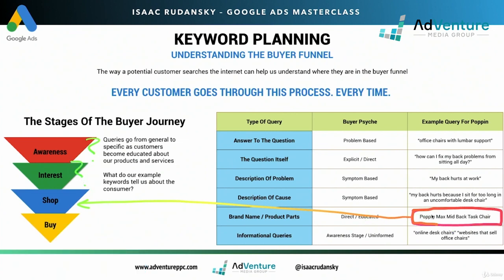We don't necessarily know what problem this person is trying to solve. Is this Jessica who has back problems? Or is this Jessica buying something for her coworker? Or Bradley the entrepreneur who just moved into a WeWork space and wants a different chair? We have no idea, but it doesn't matter — because we have something better: we have commercial intent. This is the beauty of Google Ads to begin with. We're able to capitalize on keywords that have an enormous amount of commercial intent.